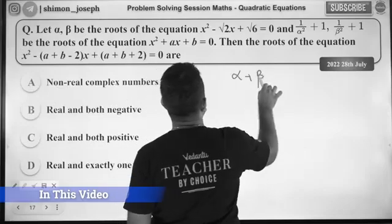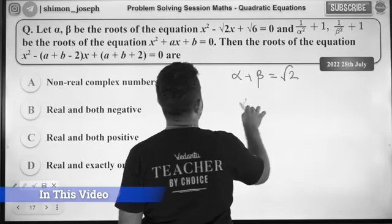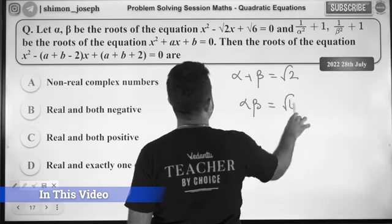Alpha plus beta, sum of the roots, is √2. Alpha beta, product of the roots, is equal to √6. This is okay.